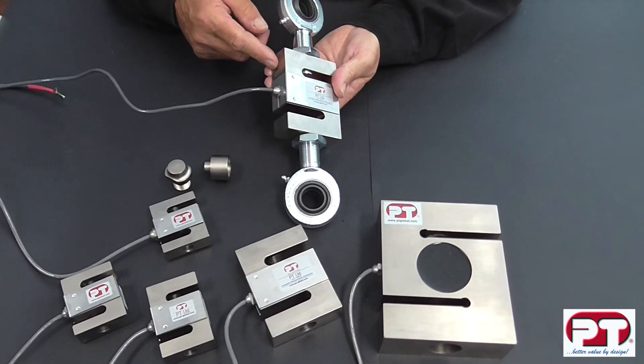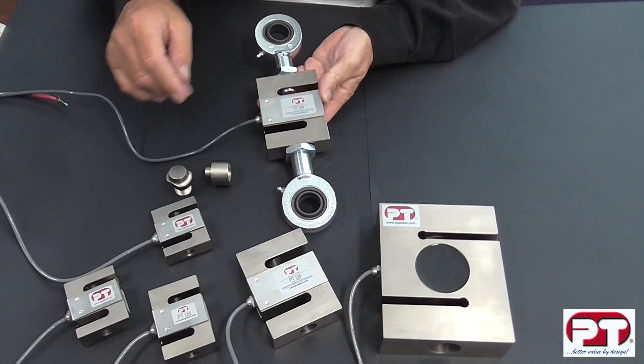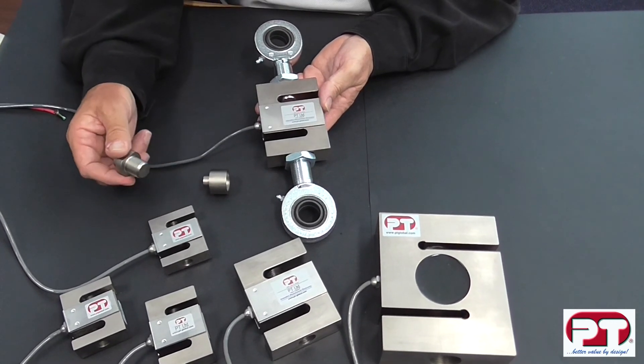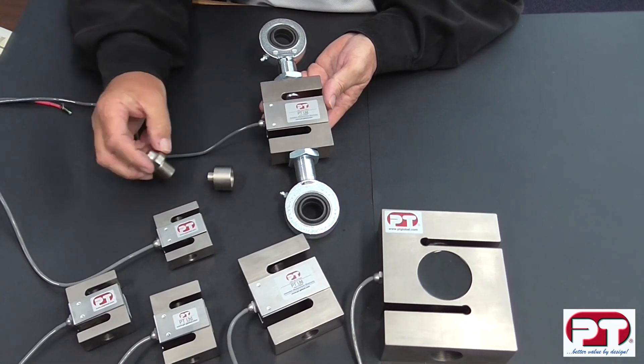Again, this is a 3,000 kg capacity load cell. All of these mounting accessories are designed to help make the weighing system more stable and work better.